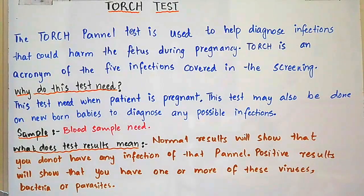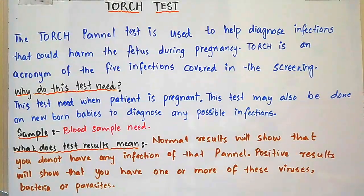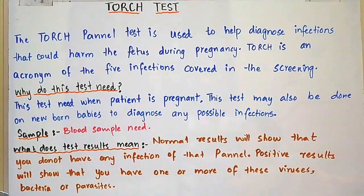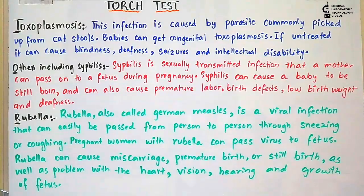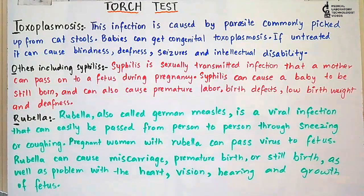Now I will explain what each letter in TORCH stands for — what is meant by T, O, R, C, and H — in a simple, easy summary form. First of all is T.